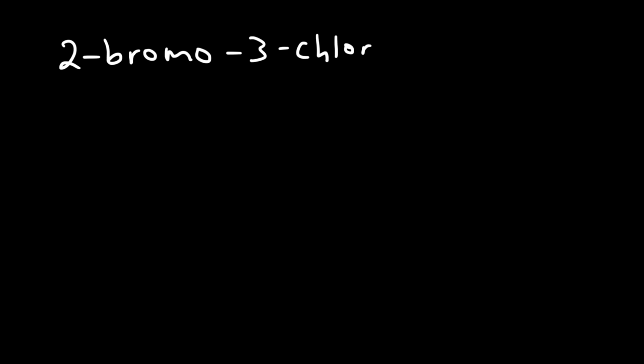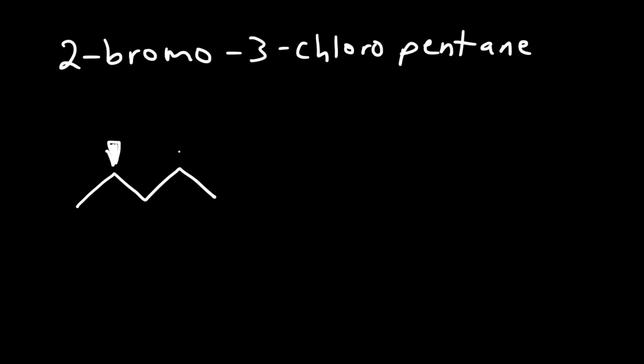Now let's try another example: 2-bromo-3-chloropentane. Draw all possible stereoisomers for this structure. We have pentane, with a bromine atom on carbon 2 and a chlorine atom on carbon 3. Because we have two chiral centers, we can draw potentially up to four stereoisomers — that's 2 to the n, or 2 squared equals 4, where n is the number of chiral centers.